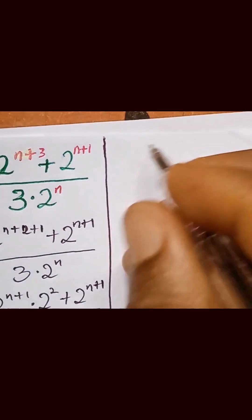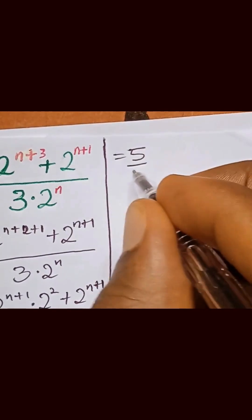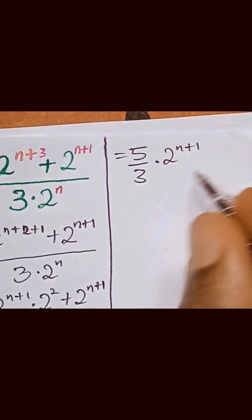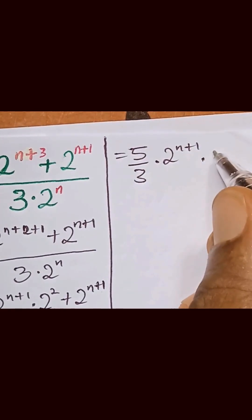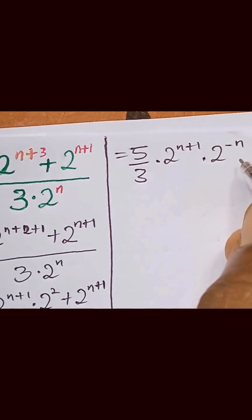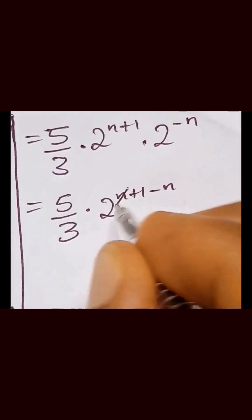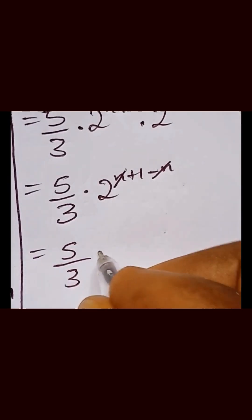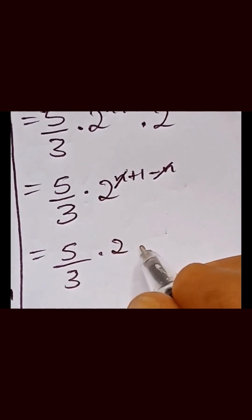The next step is to have 5 over 3 multiplied by 2 raised to power n plus 1, then multiplied by 2 raised to power minus n. This becomes multiplied by 2 raised to power n plus 1; the n cancels out, and we are left with 5 over 3 multiplied by 2, which gives 5 multiplied by 2 equals 10, over 3.